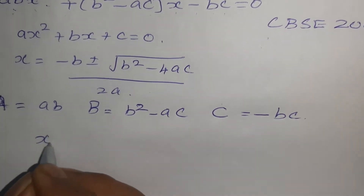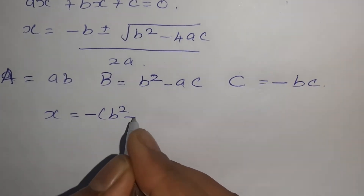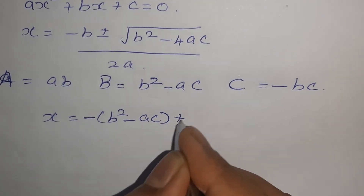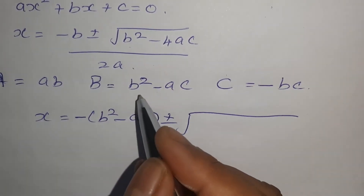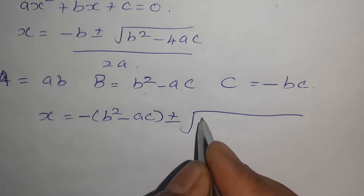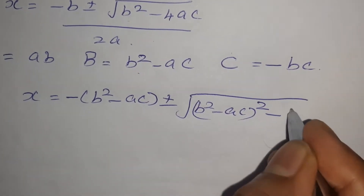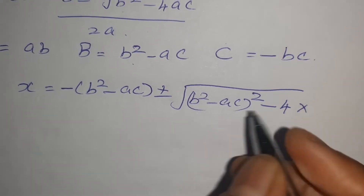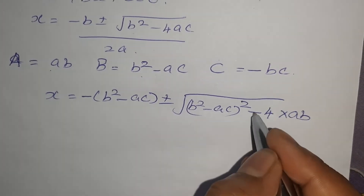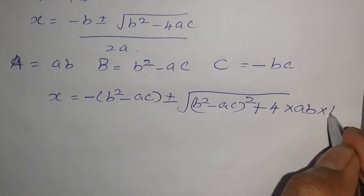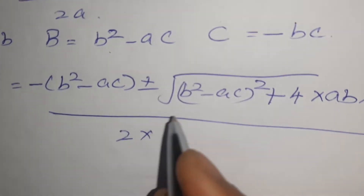So now x = [−(B² − AC) ± √((B² − AC)² − 4·(AB)·(−BC))] / (2·AB). Since A is AB, the denominator is 2AB, and the last term becomes plus 4·AB·BC.